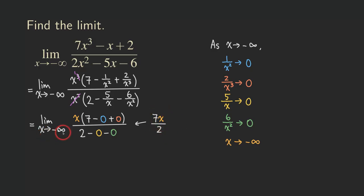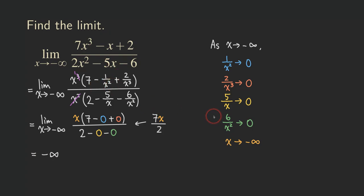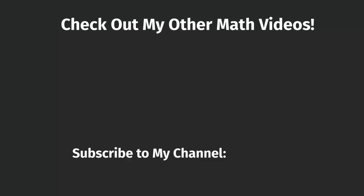Now when x approaches negative infinity: 7 over 2 is positive, and x is approaching negative infinity, so the final answer is negative infinity. This means the limit does not exist as an actual number, but we can still write down that this rational function approaches negative infinity. That's it for this problem — please like, subscribe, share, and leave a comment if you have questions. Thank you for watching!